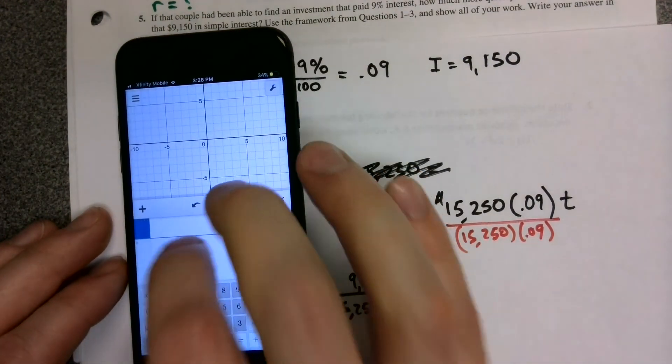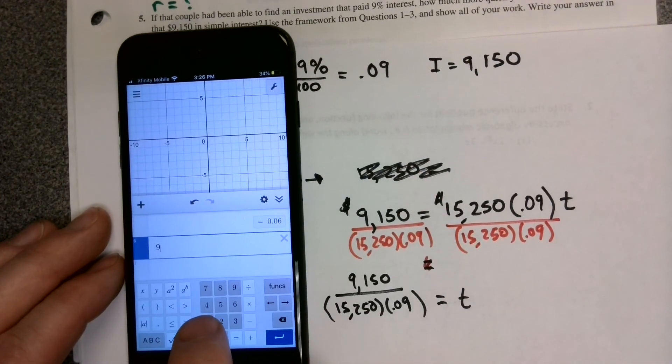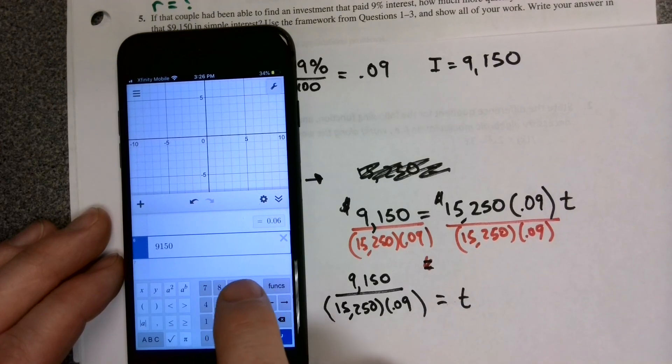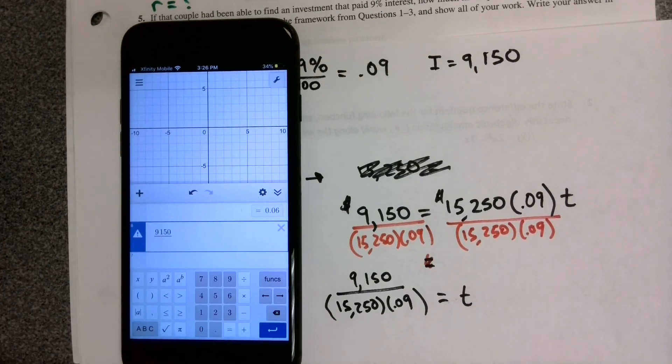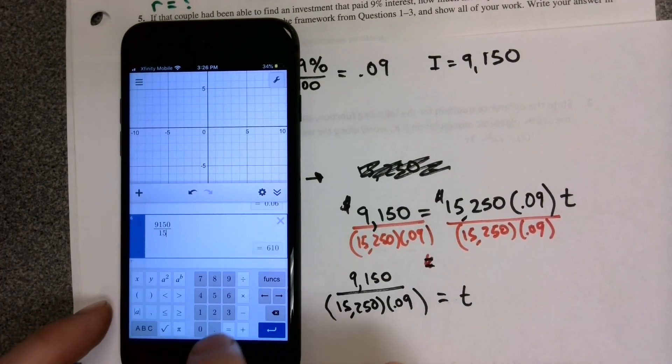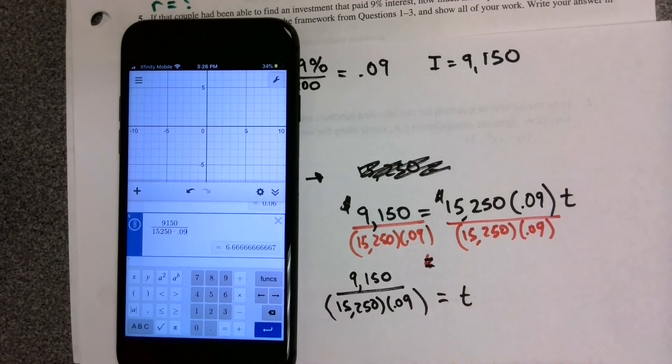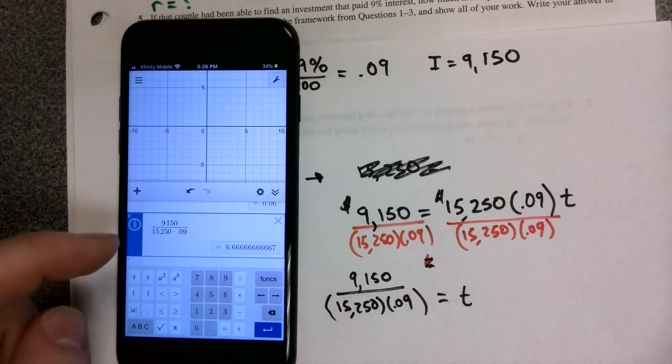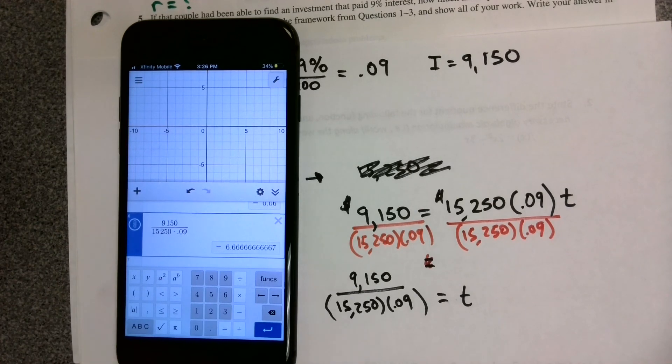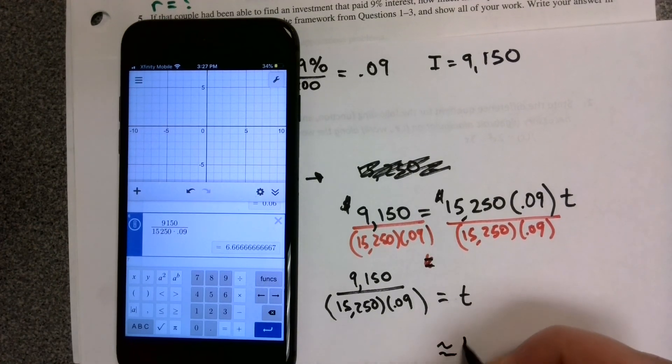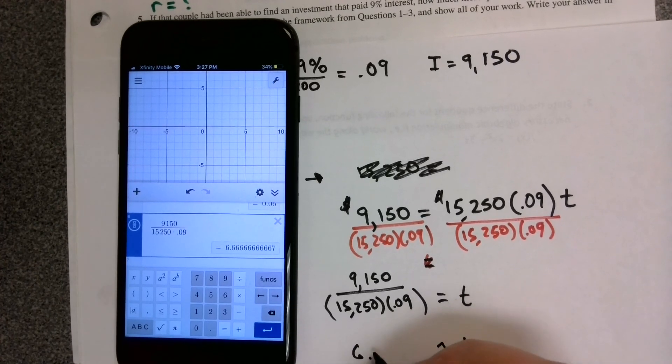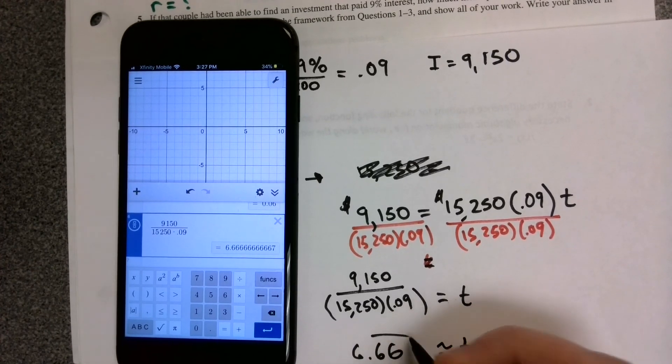Grab your Desmos calculators and let's input that. 9,150 divided by 15,250 times 0.09. Notice Desmos gives you that nice fraction bar. If you're working with a TI-84 type calculator, you could type it in directly as you see it. Notice our T value then is approximately equal to 6.67 forever repeating. You get 20 over three years.